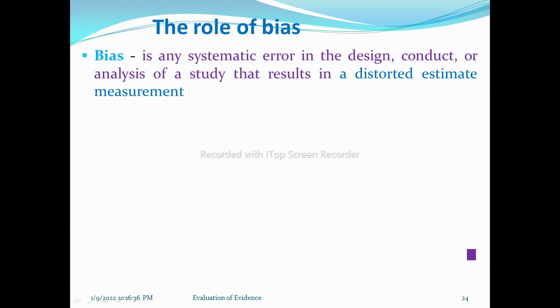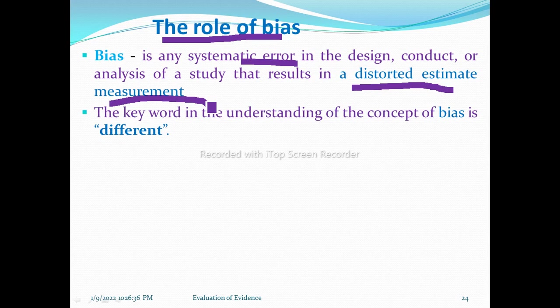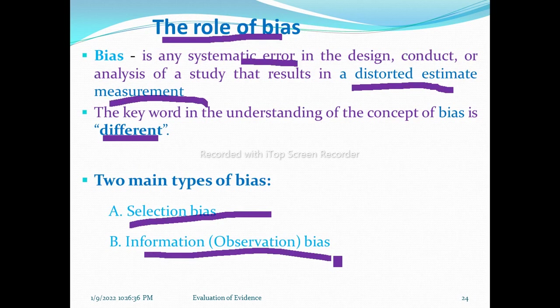The second threat to validity is bias. Bias is any systematic error in the design, conduct, or analysis of a study that results in a distorted estimate of measurement. There are two main types of bias: selection bias and information bias (also called observation bias). Each has many subcategories.